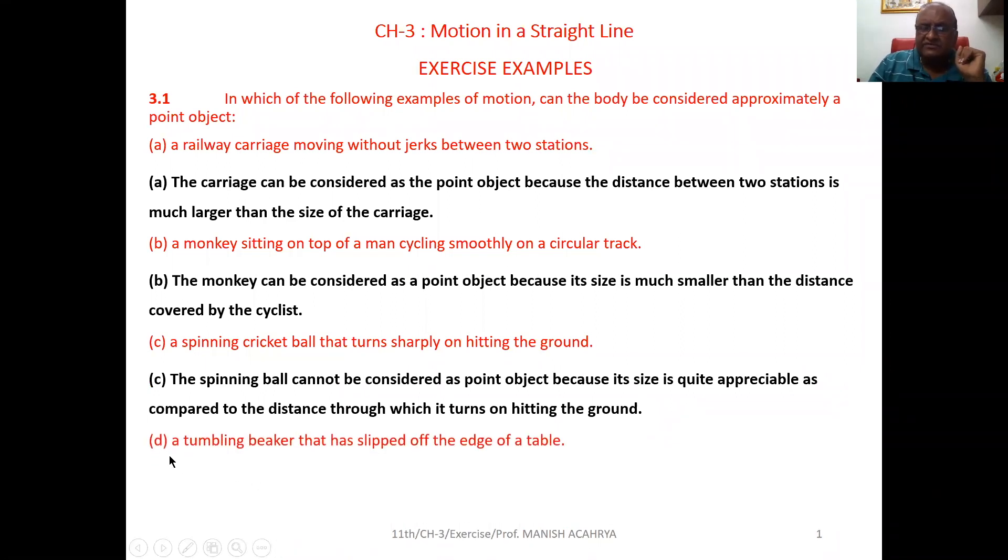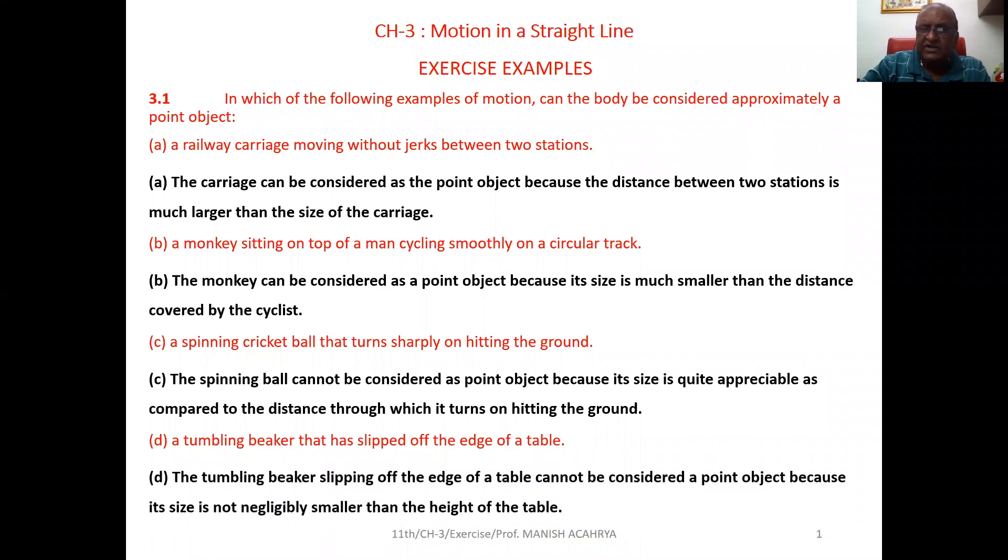Then after, D. A tumbling beaker that has slipped off the edge of the table. Now, on the table, if a beaker is placed, then the size of beaker is not very small compared to the surface area of the table or we can say compared to the size of the table. Here also it will not be considered as a point object.